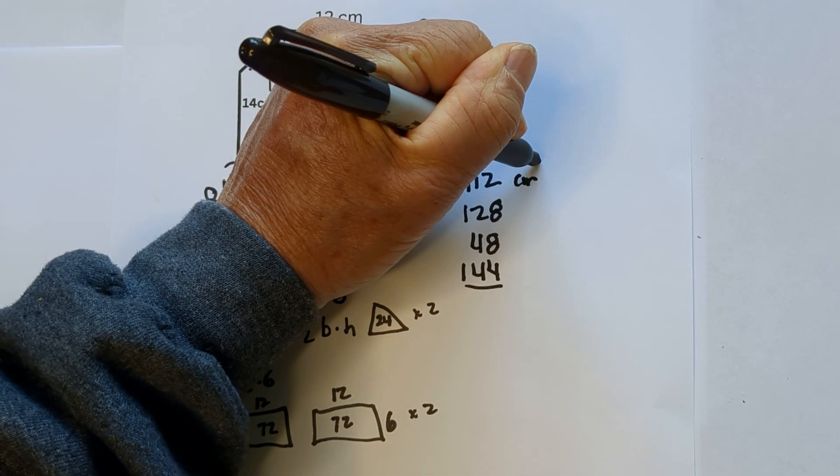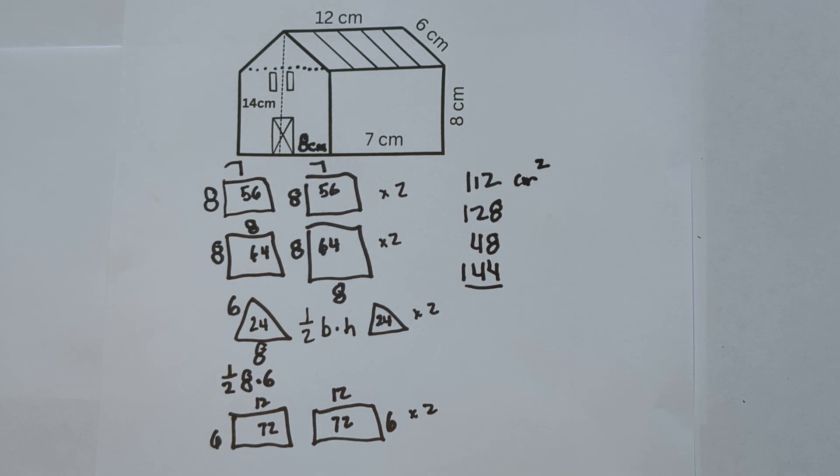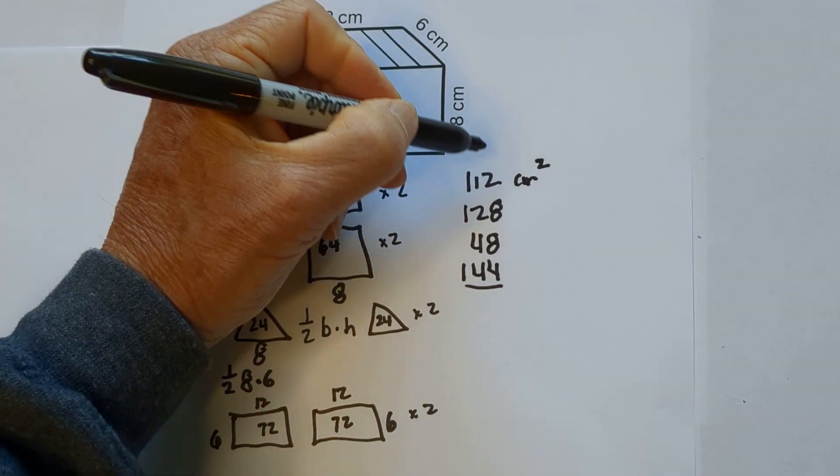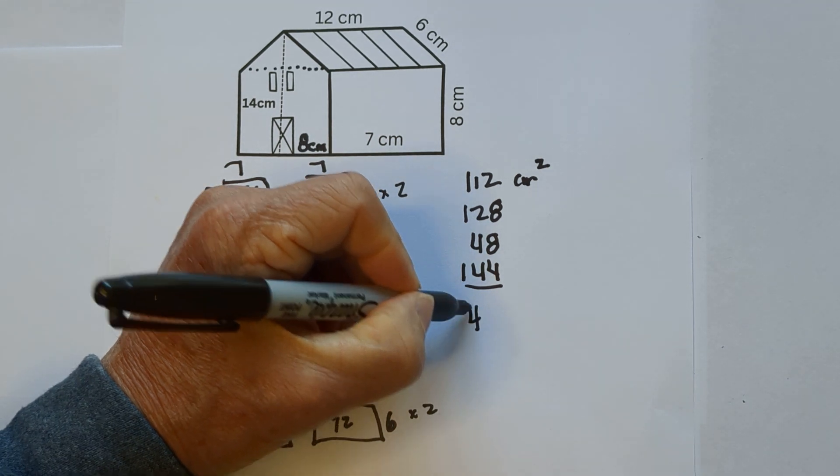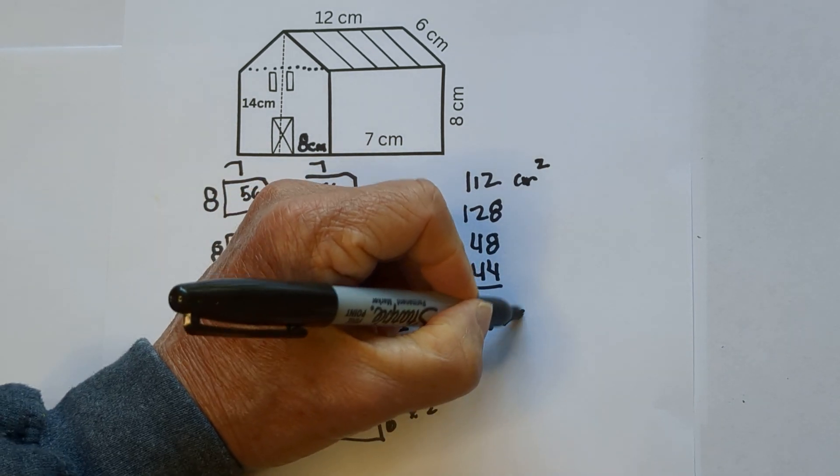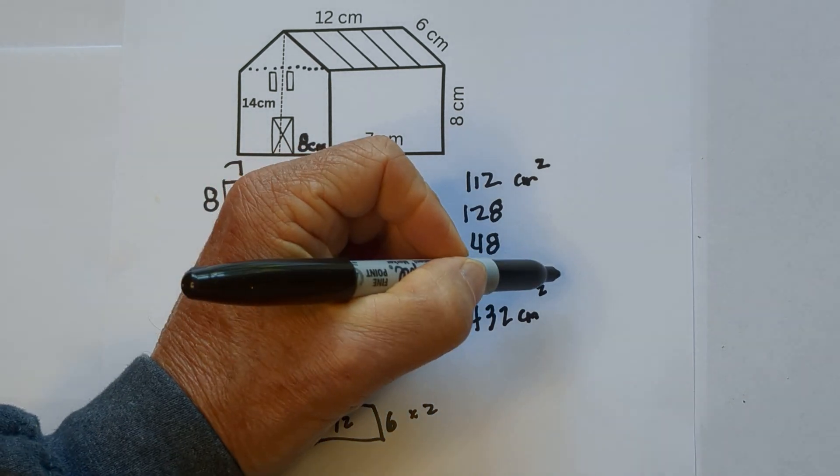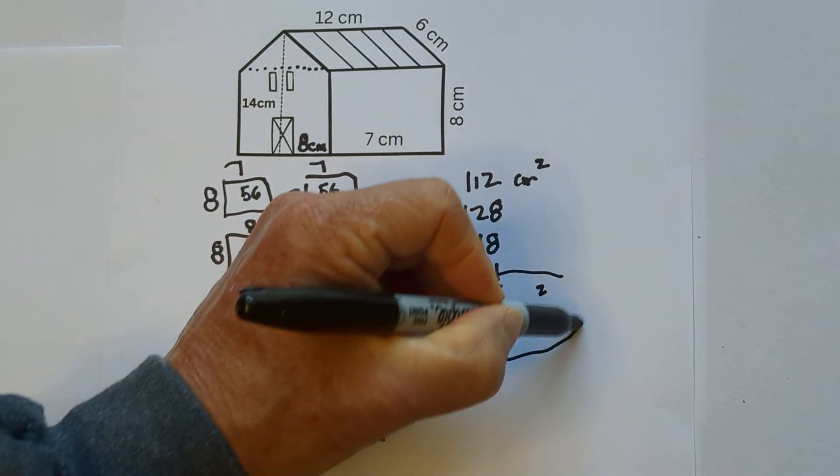Remember all of these are centimeters squared because surface area is always squared. And then when we add all this together, that equals 432 centimeters squared, so the surface area of this barn...